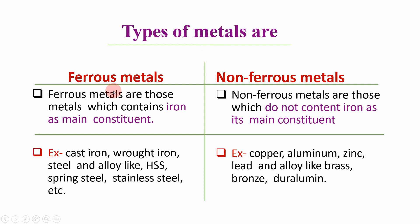Ferrous metals are those metals which contain iron as their main constituent — meaning iron is present in more than 95% of the material. These are iron-based metals; any metal containing a large amount of iron falls under the category of ferrous metals.